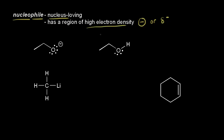So let's look at some examples of nucleophiles. First let's start with the ethoxide anion. The ethoxide anion has an oxygen with a full negative charge, so obviously that is a nucleophile, and the oxygen is the nucleophilic center of ethoxide.